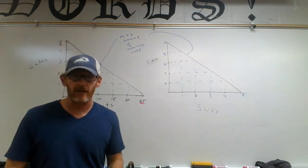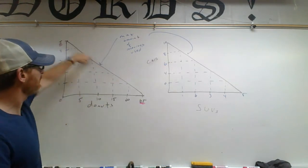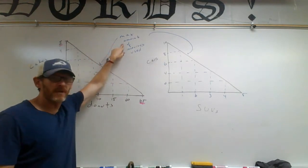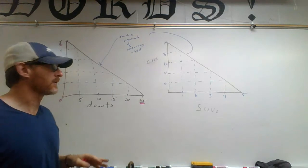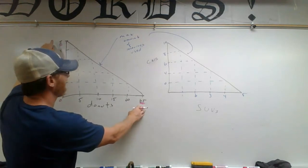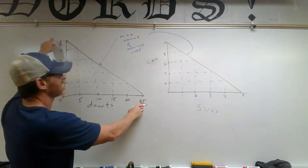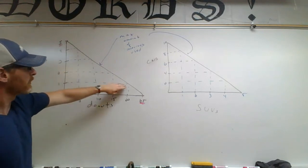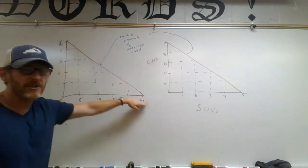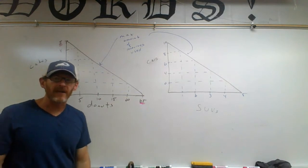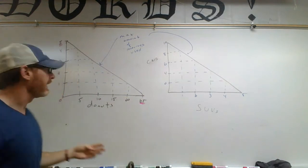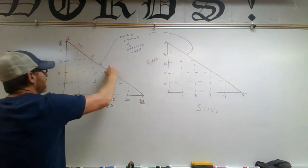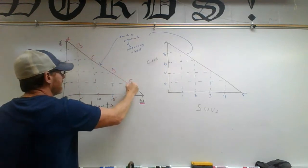Or we can use our resources to make some combination of cakes and donuts. This line represents the maximum amount of resources being used. We don't have enough resources to make 25 donuts and five cakes at the same time — that would be beyond the line. We only have enough resources to make combinations along the curve. We'll call these points A, B, C, D, E, and F.